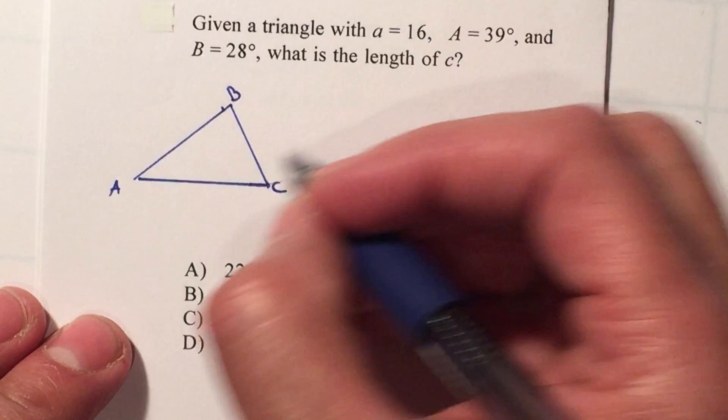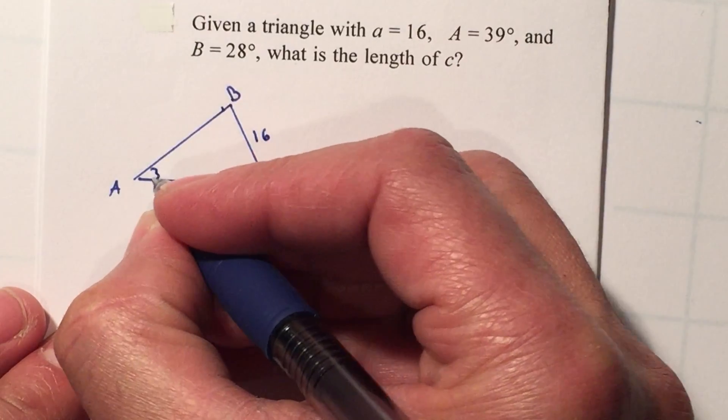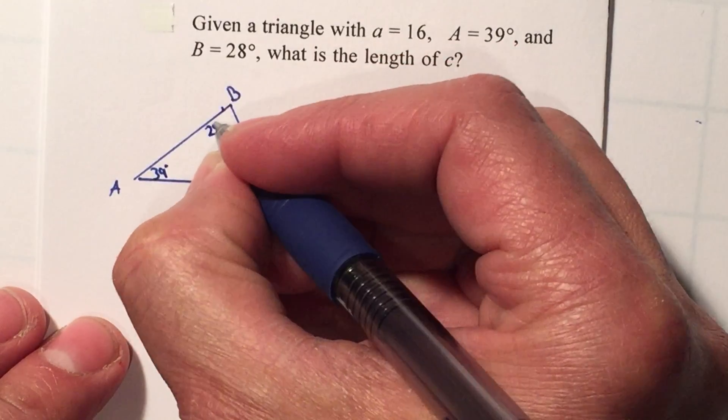Side A is 16, so therefore this is 16. Angle A is 39 degrees, angle B is 28 degrees.